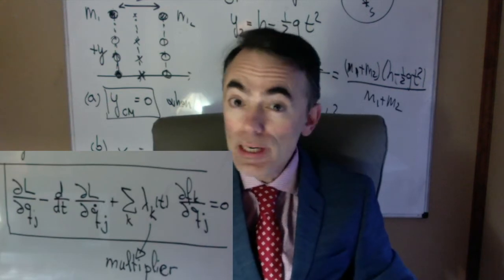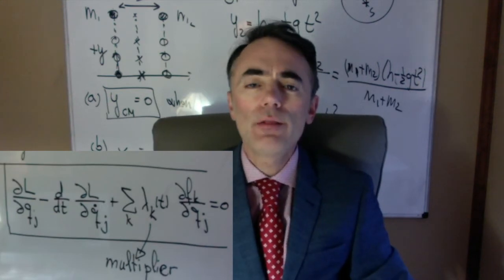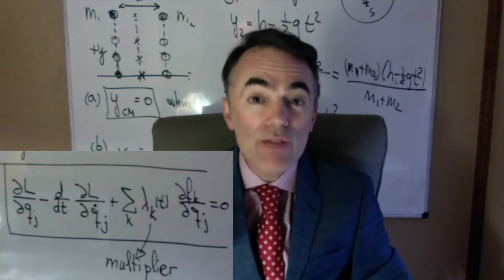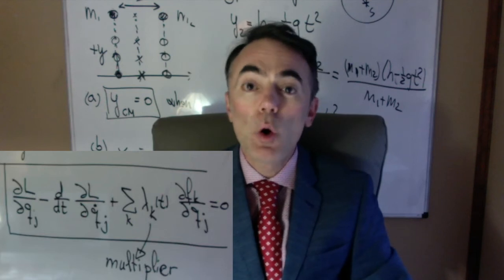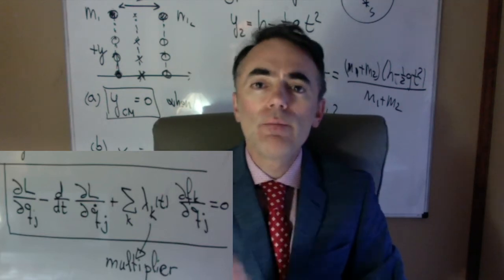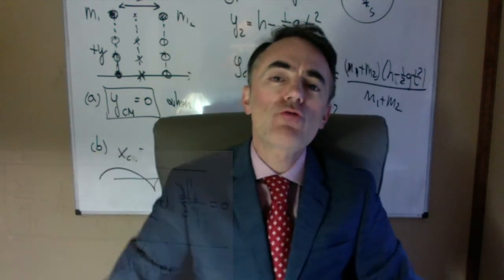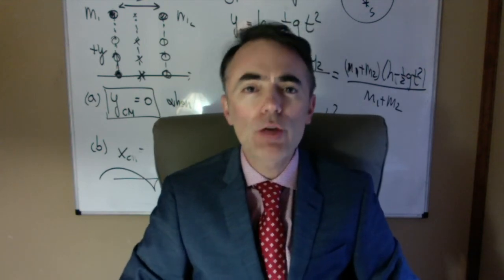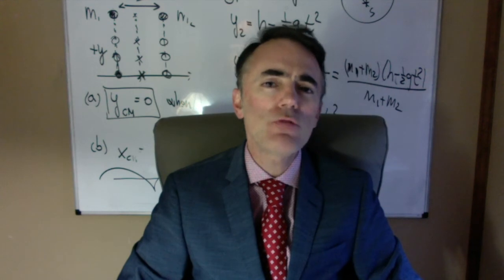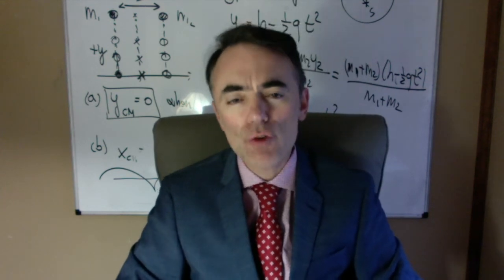If the system is a 3D system, then the Lagrangian will depend on the three variables. But if the system is limited to move along a specific 2D area or just a path, then we will have one or two constraints. We will apply Lagrange equations with multipliers to the three coordinates, and we will find the equation of motion and the constrained forces.